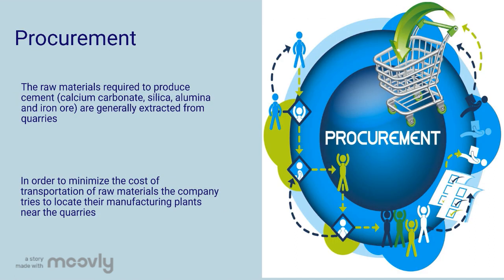Now let's move on to the first process of the supply chain: procurement of raw materials. Generally, the raw materials needed to produce cement are extracted from quarries. Dangote Cement's strategy for minimizing raw material costs is reflected in the location of their plants — plants are located near the quarries where they can extract all required raw materials. This minimizes transportation costs and reduces lead time to almost zero.